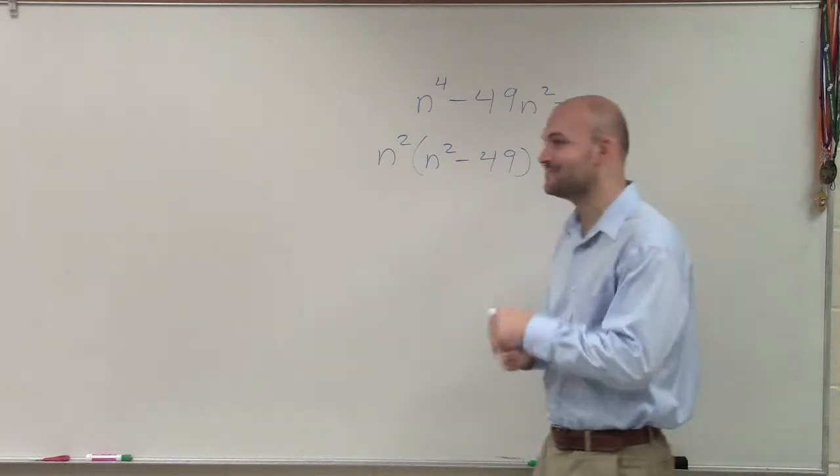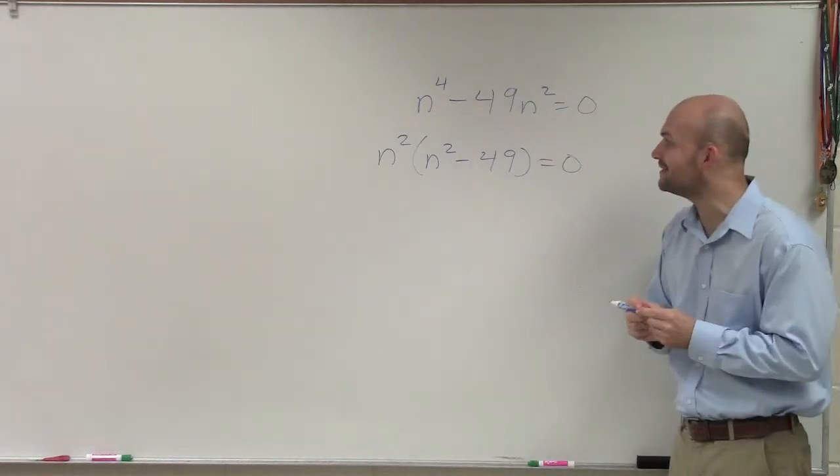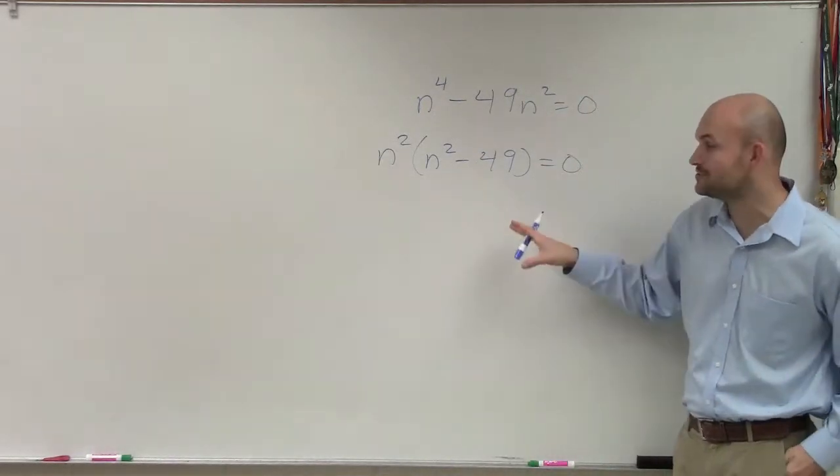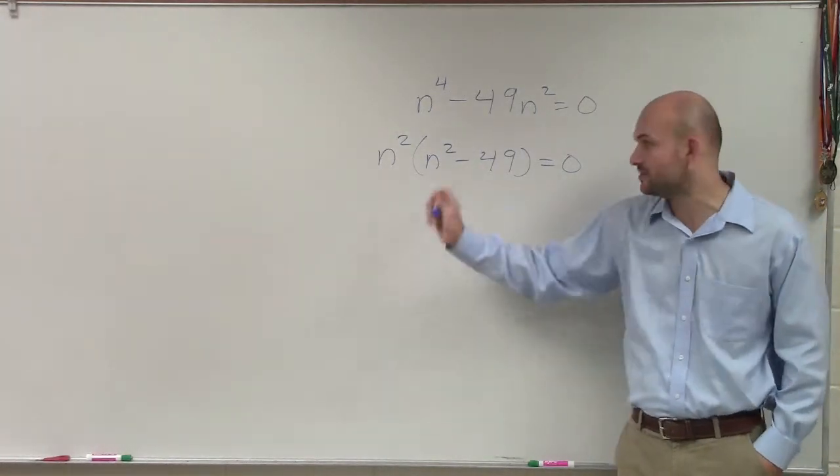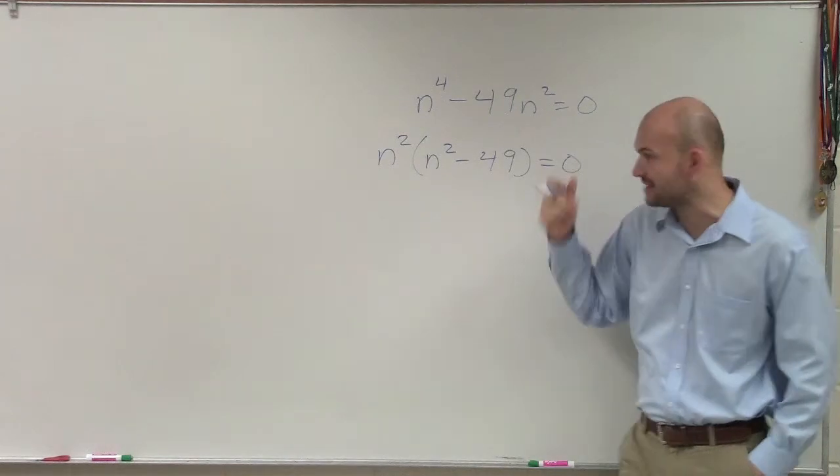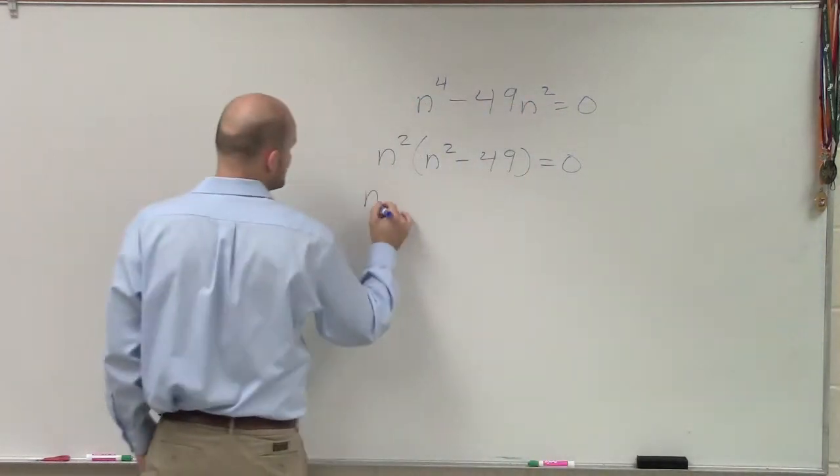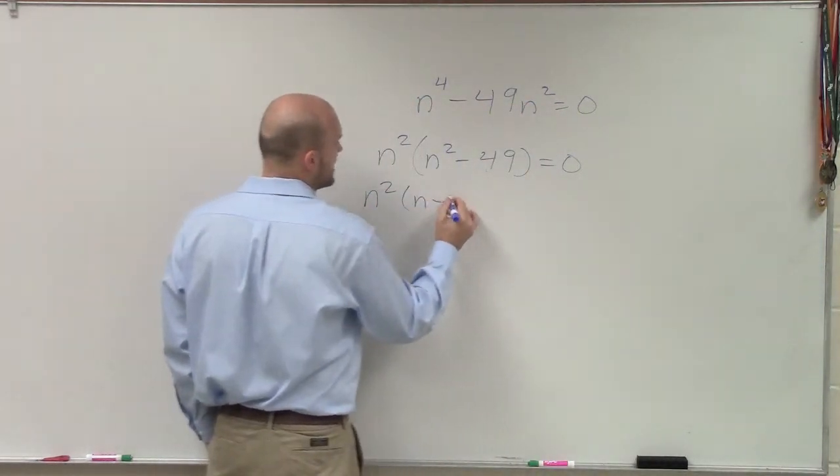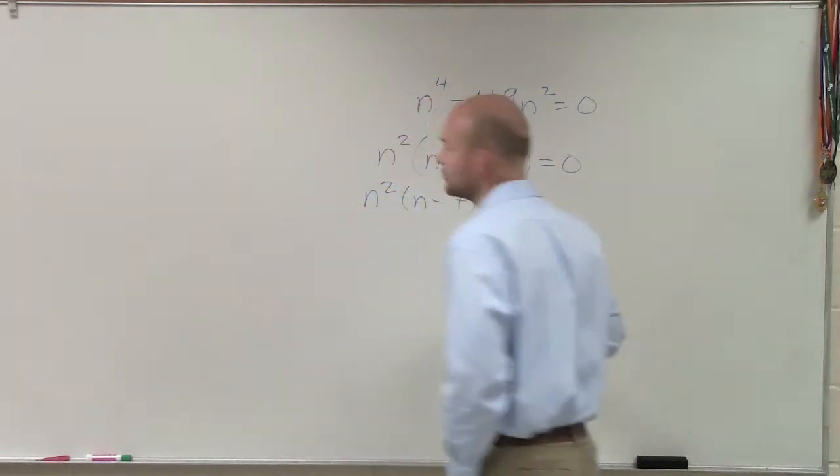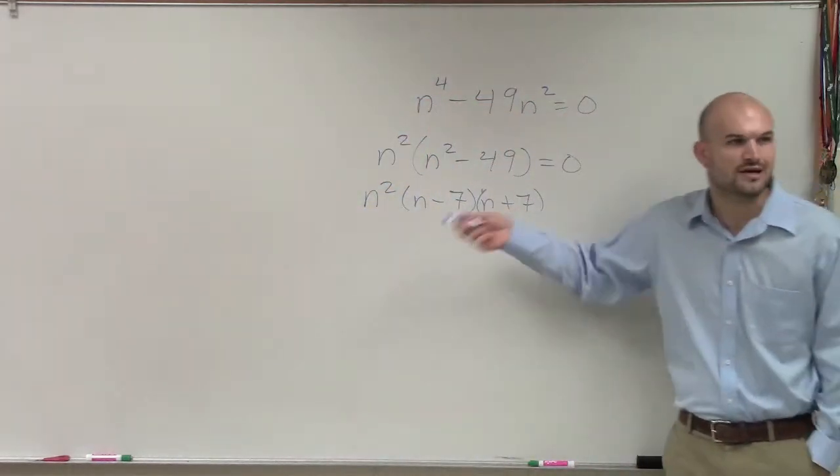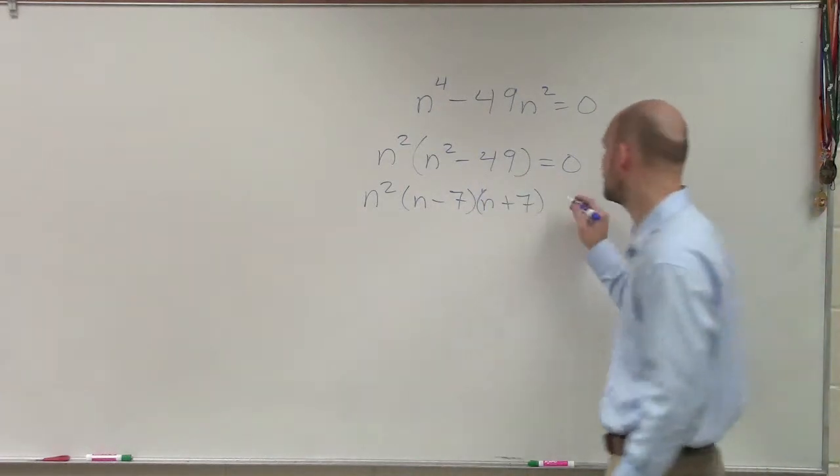Difference of two squares. You have a great group with you to help me all out. So yes, this is a difference of two squares. Now, you can set this up with zero product property if you want to and then solve by zero product property. Or you can just simply say n squared times n minus seven times n plus seven. I'm not going to go through the whole difference of two squares again because we practiced a lot of those problems, equal zero.